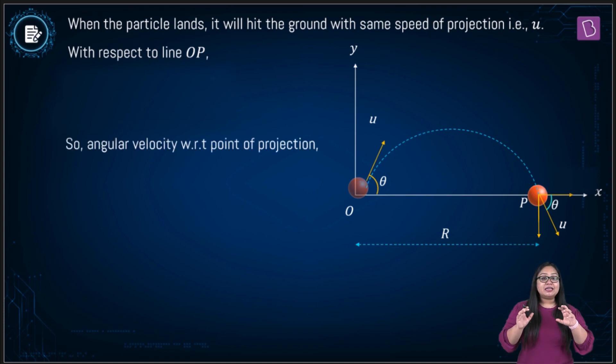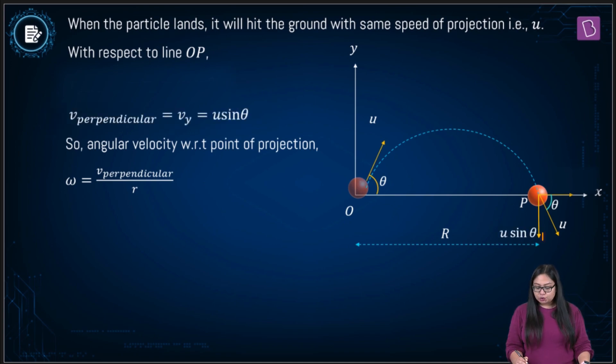Now angular velocity of any particle moving with a velocity v can be calculated by component of its velocity perpendicular to r divided by r. So here also v perpendicular divided by r will give you the angular velocity. Now v perpendicular here can be easily written as u sine theta and v parallel will be u cosine theta.